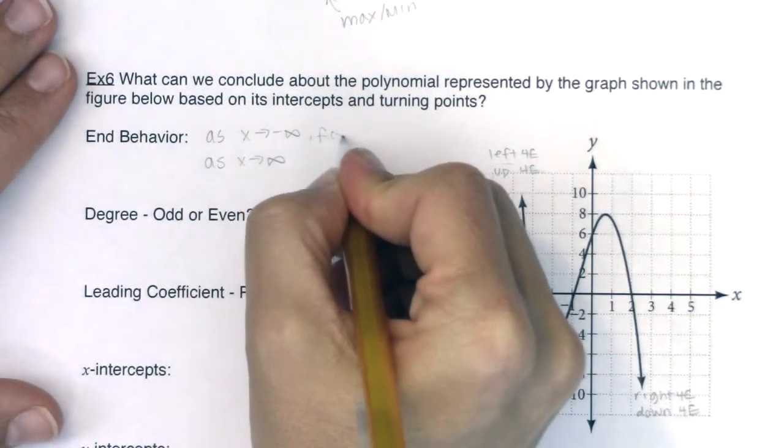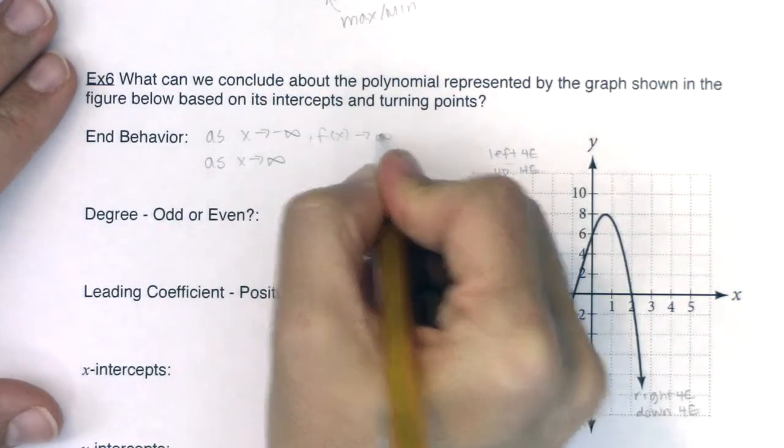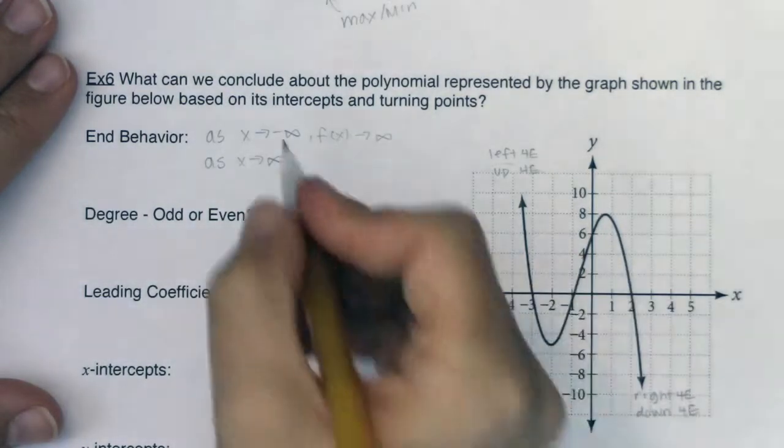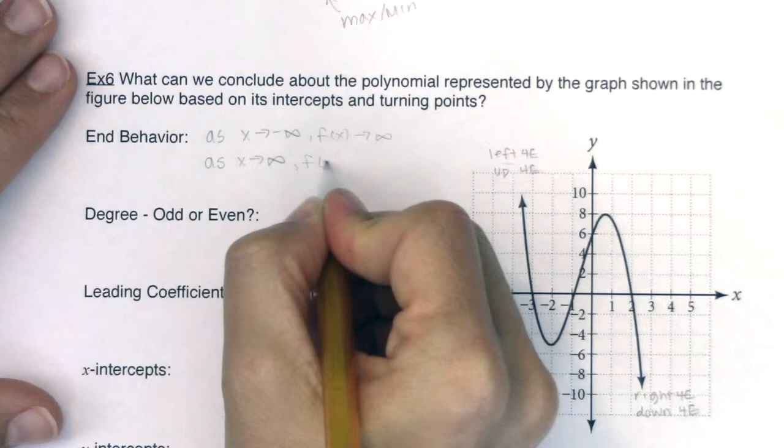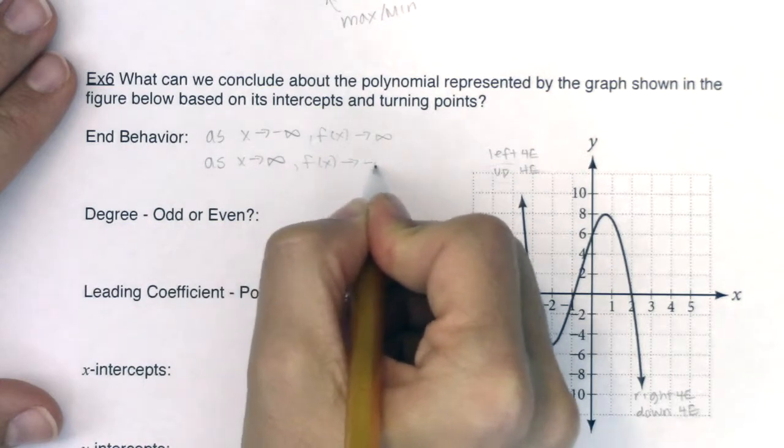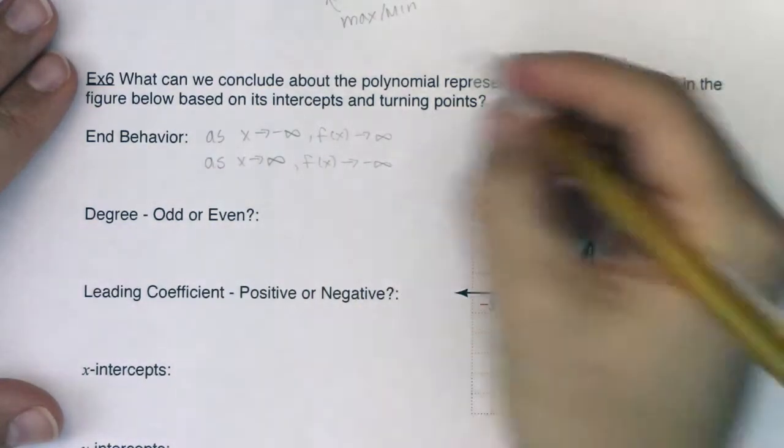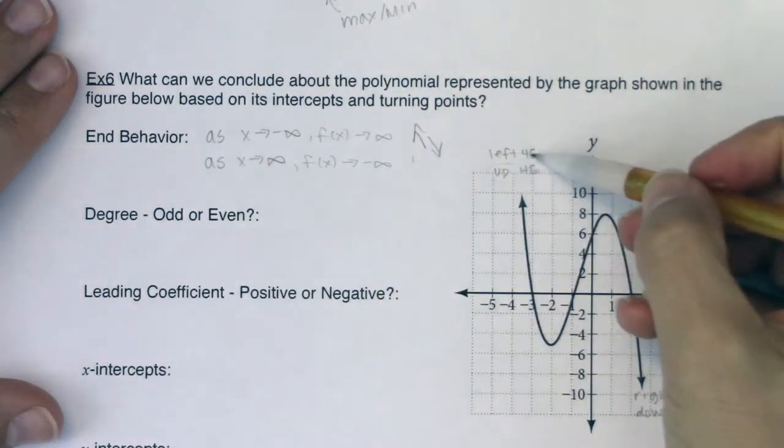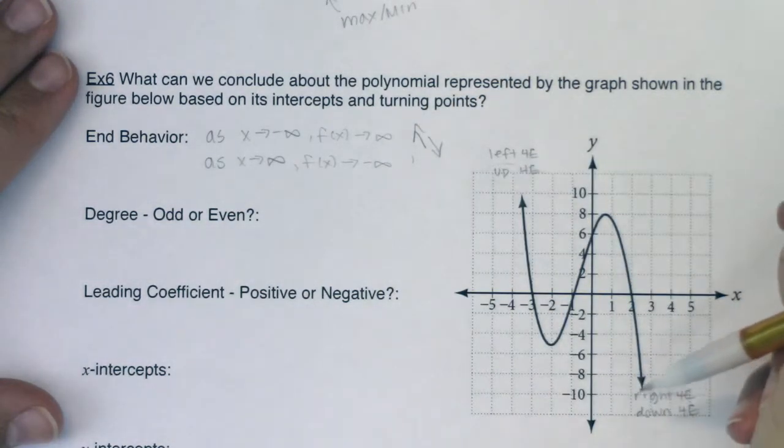So I know f(x) is going to positive infinity. And as I head right, I can see I'm heading down, so f(x) is heading to negative infinity. If I wanted to write this up as arrows, I would just write this, or I could say left end up, right end down.